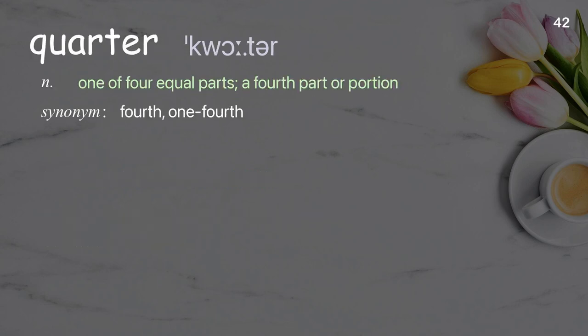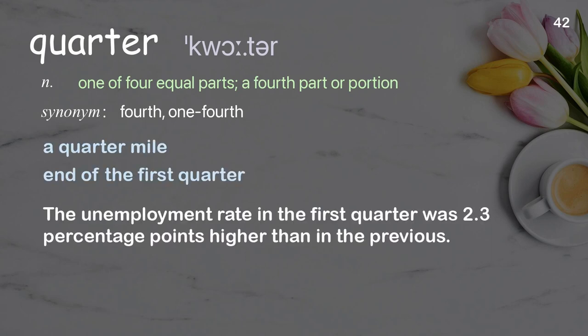Quarter. One of four equal parts; a fourth part or portion. Examples: A quarter mile. End of the first quarter. The unemployment rate in the first quarter was 2.3 percentage points higher than in the previous.